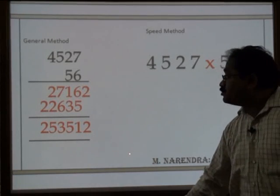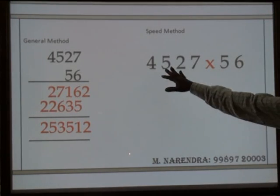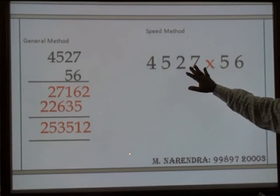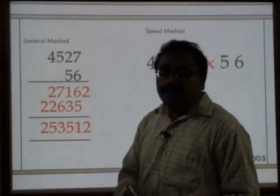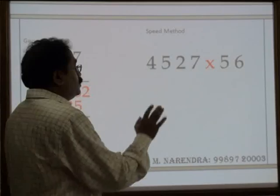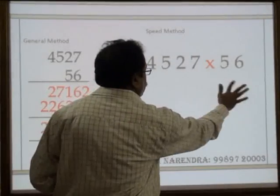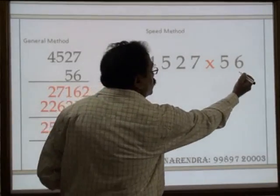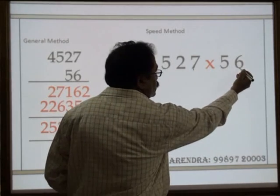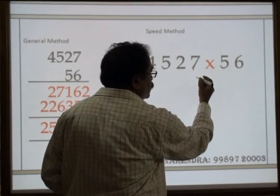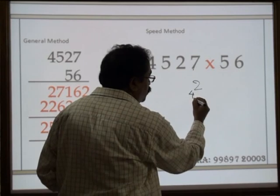But before I go to the examples, let's take another number — that is 4527 into 56. How do we multiply it in one line? So, as I did previously: 7 times 6 is 42. Carry 4.